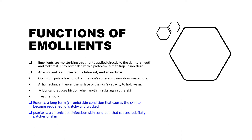Third, emollients act as an occluder — they put a layer of oil on the skin surface which slows down water loss by reducing evaporation. So the three key functions are: humectant, lubricant, and occluder. Apart from that, they are used for the treatment of skin diseases such as eczema, a chronic skin condition causing redness, dryness, itchiness, and cracking, and psoriasis, a chronic non-infectious skin condition causing redness and flaky patches.